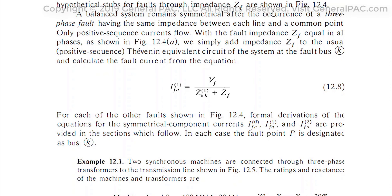A balanced system remains symmetrical after the occurrence of a three phase fault having the same impedance between each line and common point. And because it has the same impedance, that's why it's a perfectly balanced three phase fault. The author states that only positive sequence currents flow, with the fault impedance ZF equal in all phases. We simply add impedance ZF to the usual positive sequence equivalent circuit of the system at the fault bus K and calculate the fault current — taking the pre-fault voltage in per unit divided by the positive sequence impedance in per unit, plus the fault impedance if present. It's just a simple Ohm's law to calculate the positive sequence fault current.